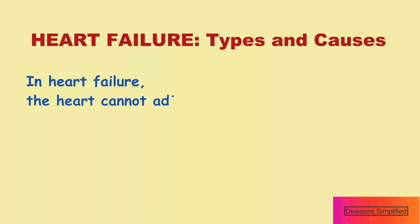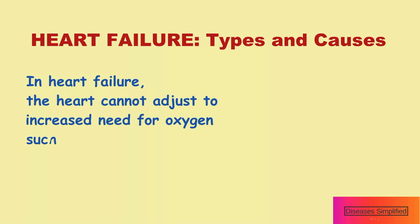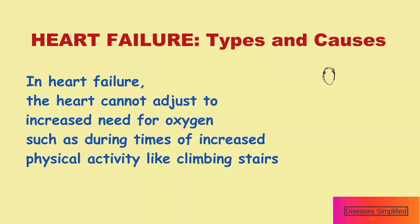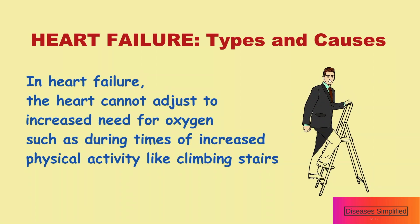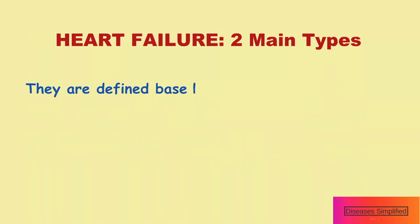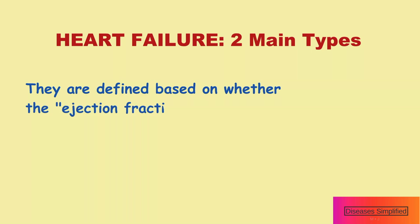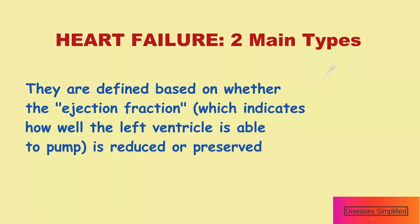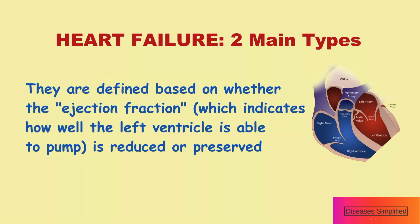When a person has heart failure, the heart cannot adjust to increased demand for oxygen, such as during times of increased physical activity like climbing stairs. There are two main types of heart failure. They are defined based on whether the ejection fraction, which indicates how well the left ventricle is able to pump, is reduced or preserved.